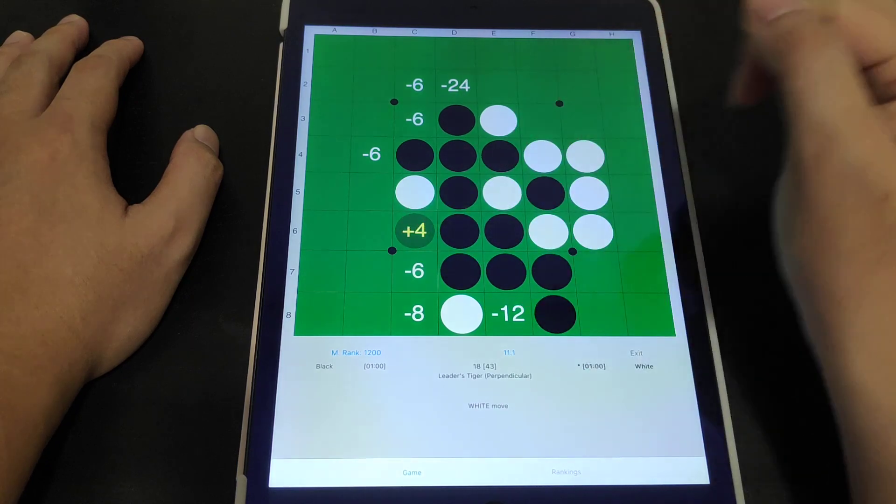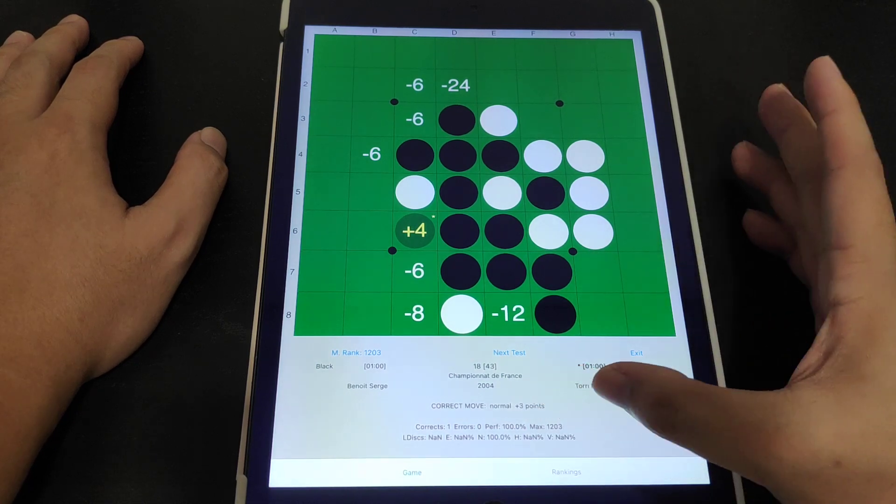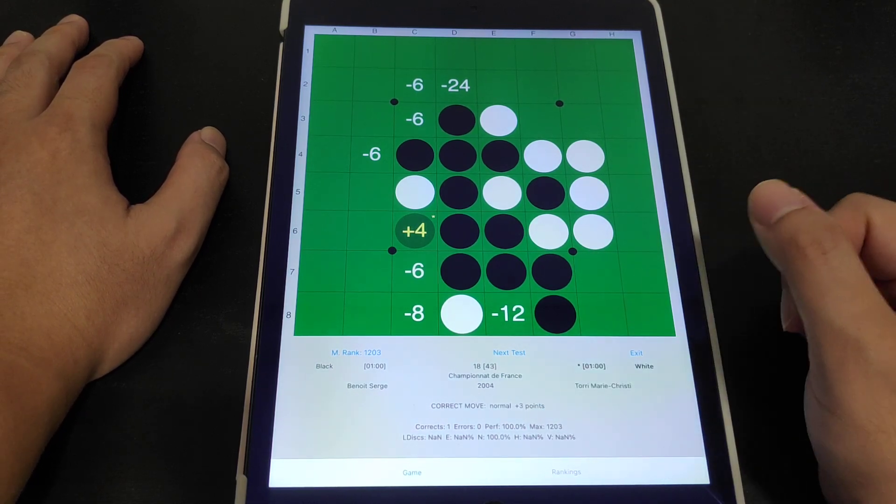So indeed it's correct. It's plus 4. It seems like I got the correct move. Now after some running they will tell you that this is the correct move. You plus 3 points over here.